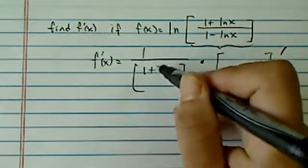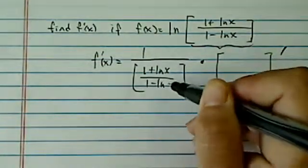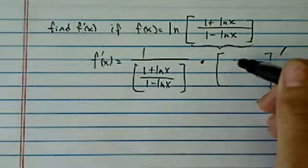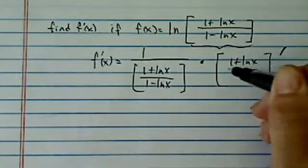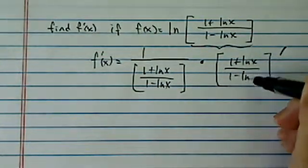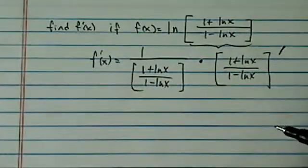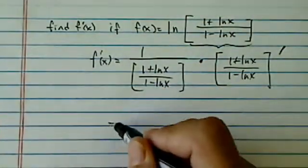And inside the bracket I have 1 plus natural log, 1 minus natural log. And the thing we're going to be taking derivative also using chain rule is 1 minus x natural log. Alright, this looks pretty complicated.